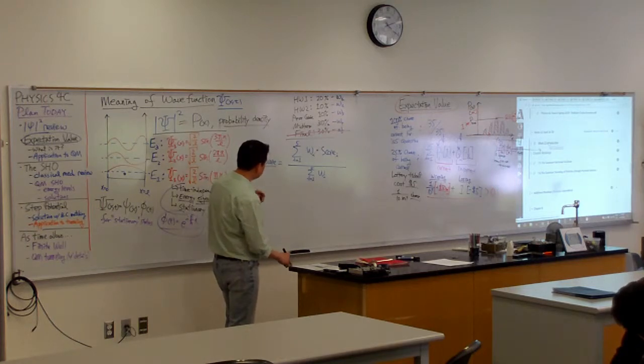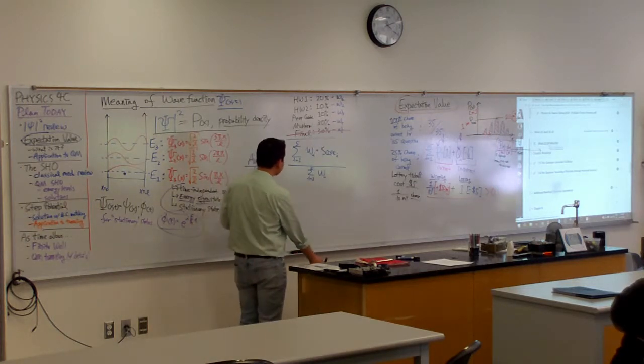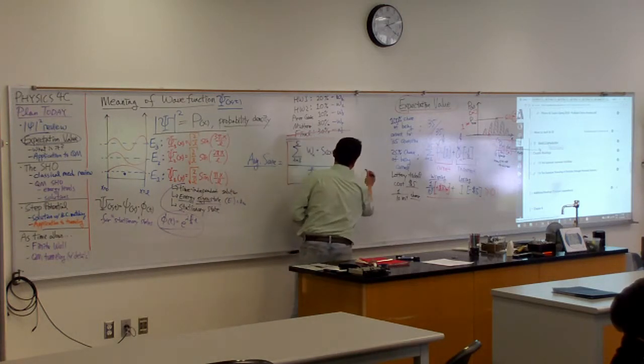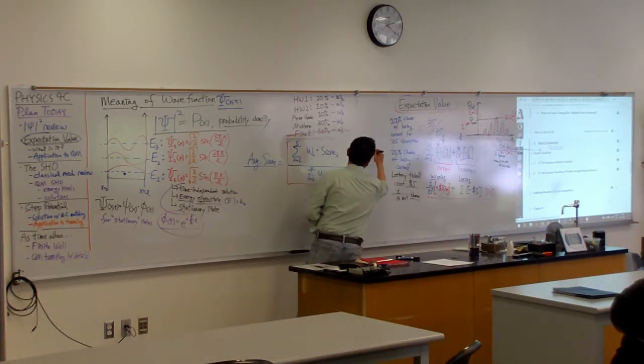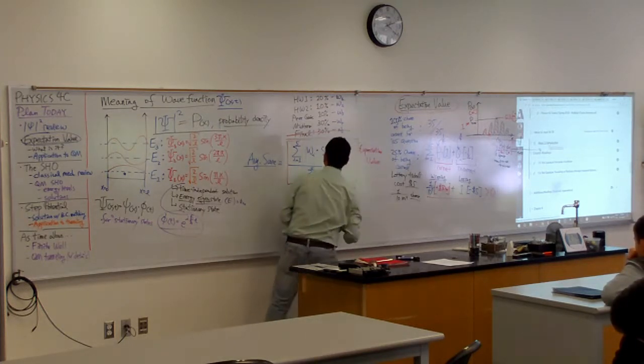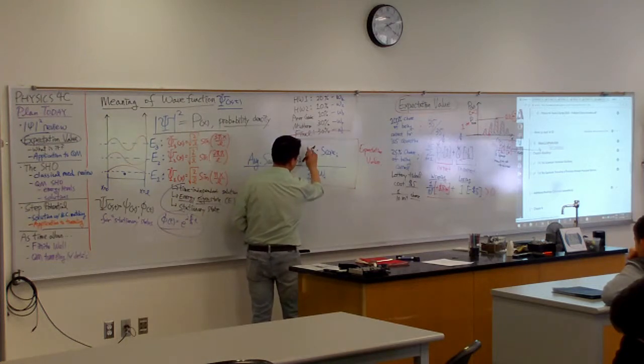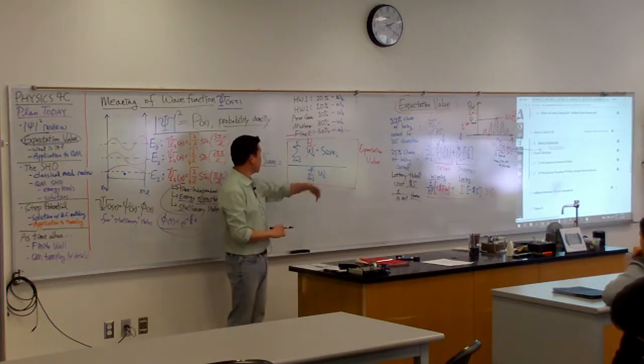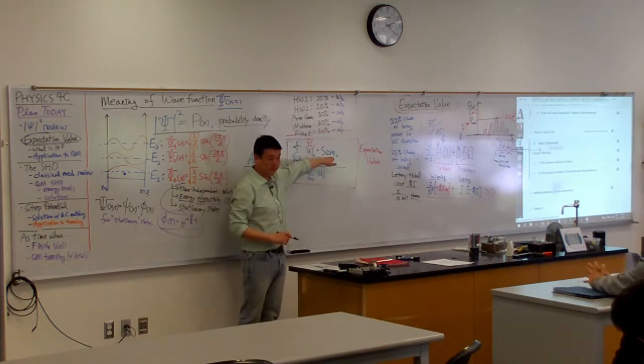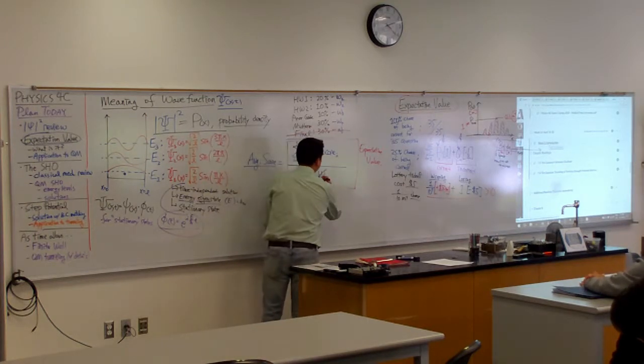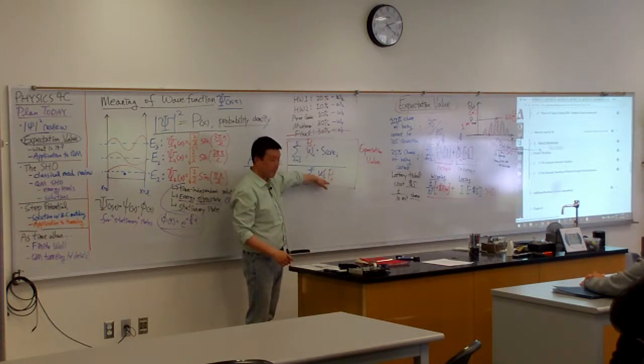So, in the expectation value, if I want to get expectation value out of it, then what I do is, where I have weight here, instead of weight, it becomes the probability of that particular outcome happening. You multiply that, add them all up, and then you divide it by sum of all probability of all the outcomes happening.